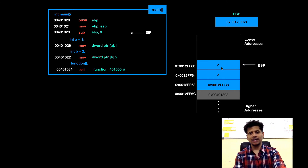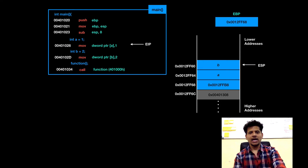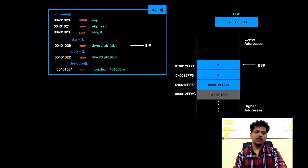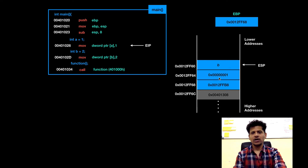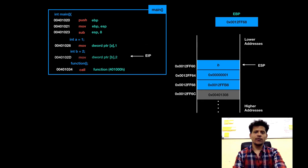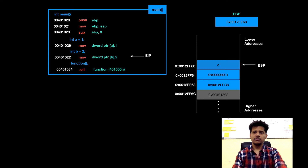We have allocated some space onto the stack for two variables. Next C statement is we are defining integer a equals 1, and that assembly instruction is move 1 into the space allocated by the compiler. We will execute that and the value on the stack got changed to 1. Next C statement is integer b equals 2. For that we will move 2 into the other allocated space onto the stack, and that got changed.